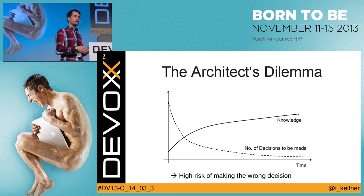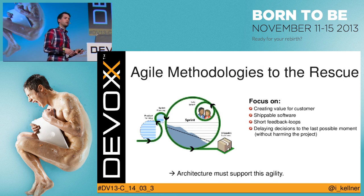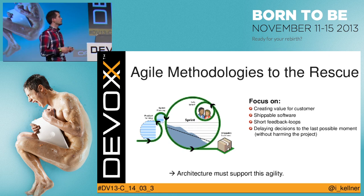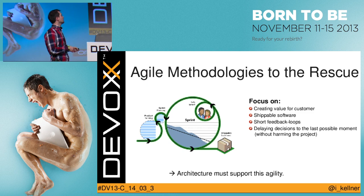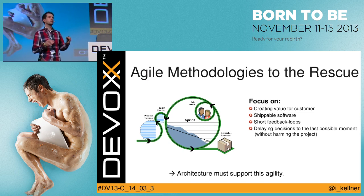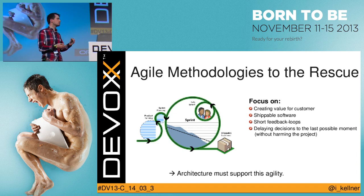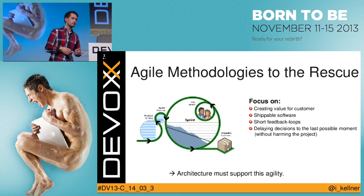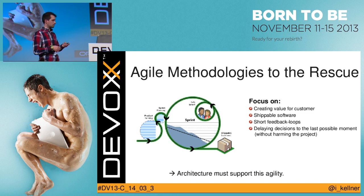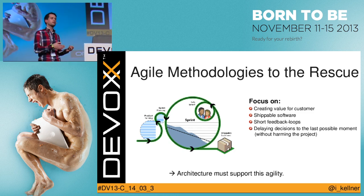That's where agile processes come into play. We want to deliver running software, get feedback from the customer, and ship working software. We want to verify these decisions and delay them to the last possible moment — when we have the most knowledge about the problem domain — so there's the least risk of making wrong decisions. Agile methodologies and architecture are interconnected: architecture must support this flexibility and agility.